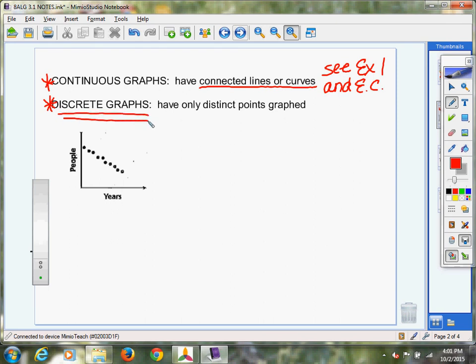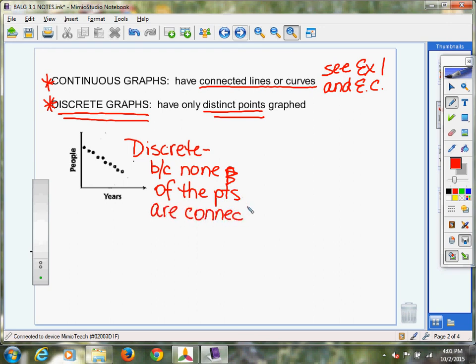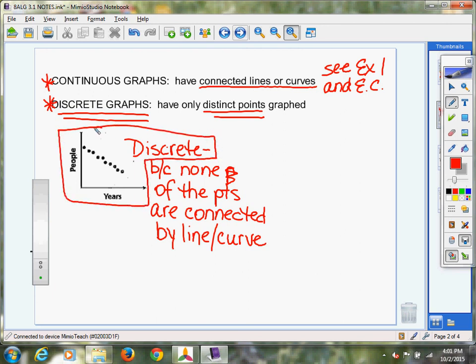A discrete graph, there's that word again. We've done discrete graphs before. You are graphing distinct points. You're not connecting those points. So this is a discrete graph. And the reason is because none of the points, none of the points are connected by a line or curve. So if you don't have anything connecting your points together, that would be considered a discrete graph. This is a great example right here of a discrete graph.